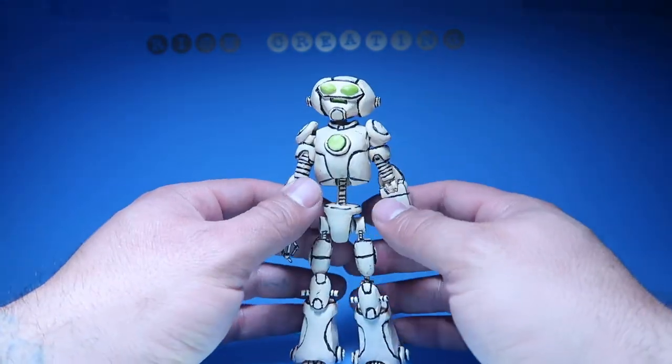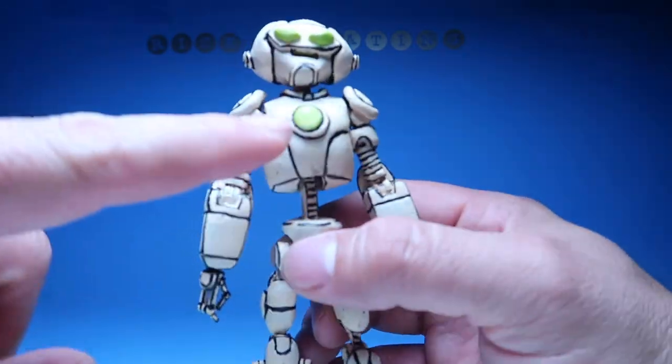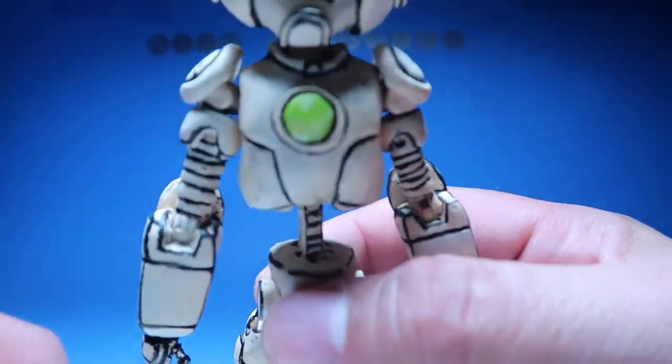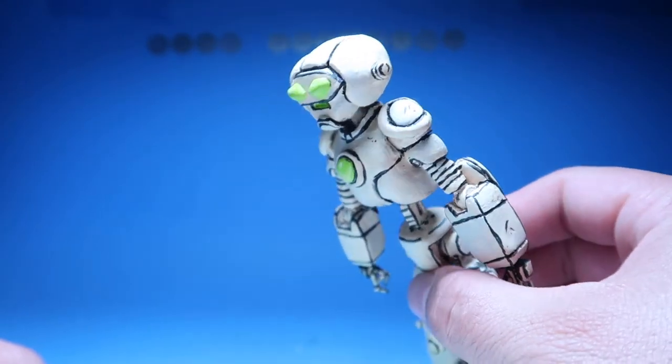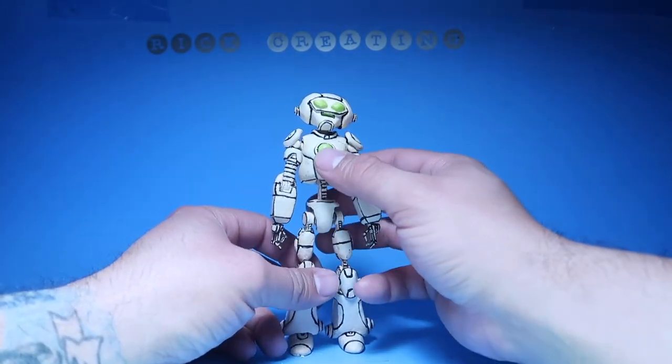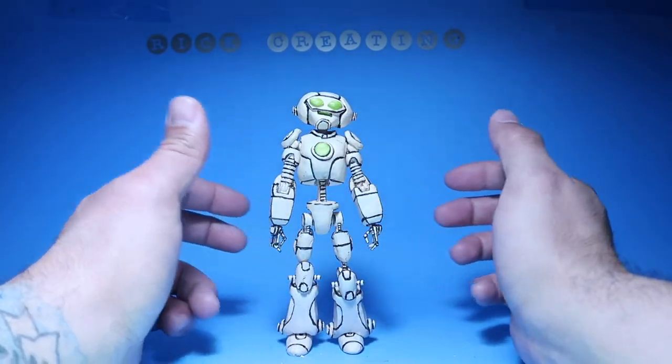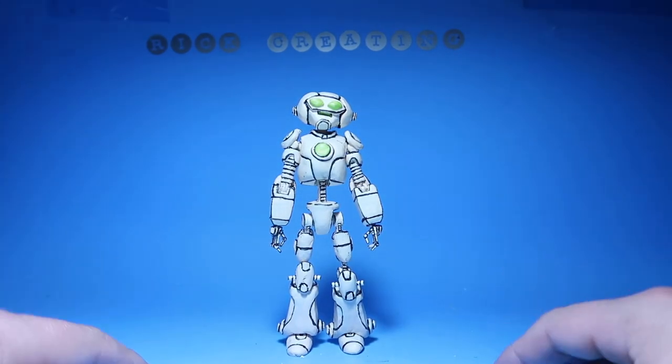Fugitoid from Teenage Mutant Ninja Turtles. I think it came out pretty freaking awesome. I really like how this little thing in the middle looks. I don't know if the camera's picking it up or not. But anyways, there he is. Fugitoid from the Teenage Mutant Ninja Turtles comic book series. So yeah, anyways, that's gonna wrap it up.